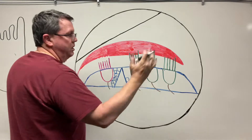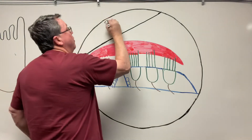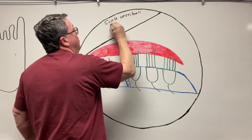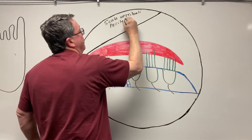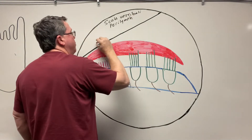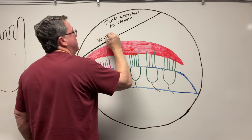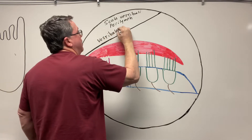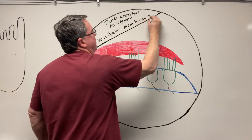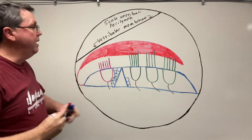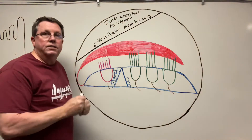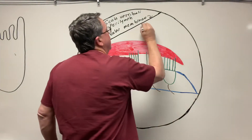Remember you're looking at a cross-section of a long tube. This is the scala vestibuli up here, and this is going to contain a fluid called perilymph. This structure right here — this line — is going to be a membrane called the vestibular membrane. And then we're going to have this middle section right in here, which is going to be known as the scala media.